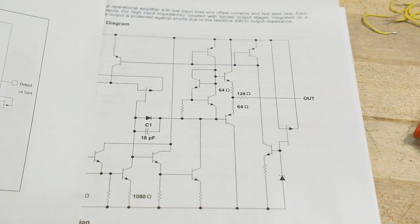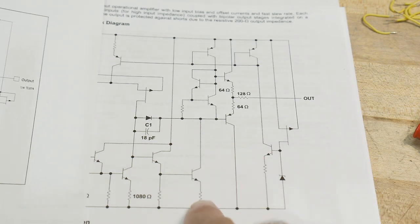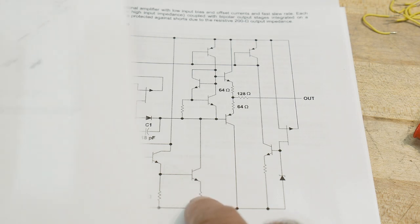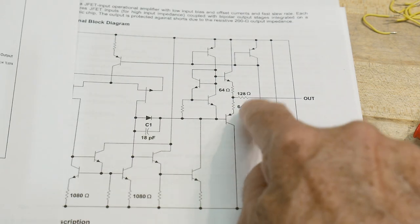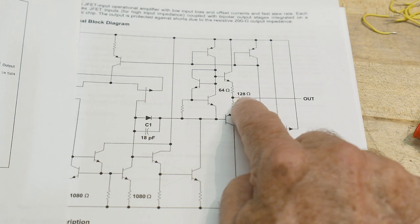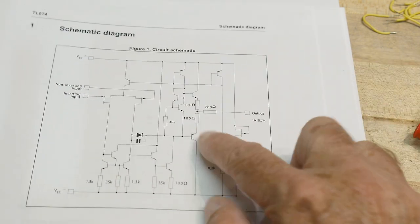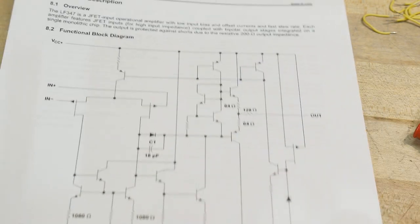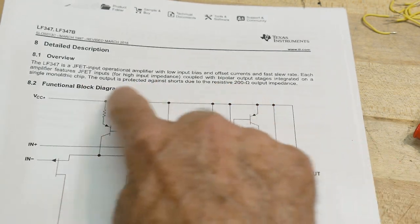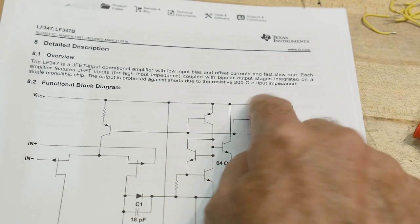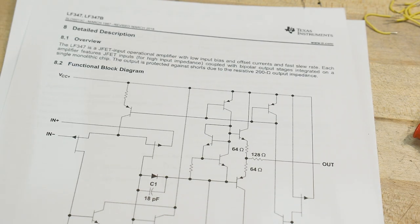So this resistor here is 8.2k on the other sheet. The output resistance is 128 ohms here and it's 200 ohms here. But if you read the verbiage, it says the output is protected against shorts due to the 200 ohm output impedance, so I have suspicion that they just cut and pasted this datasheet.